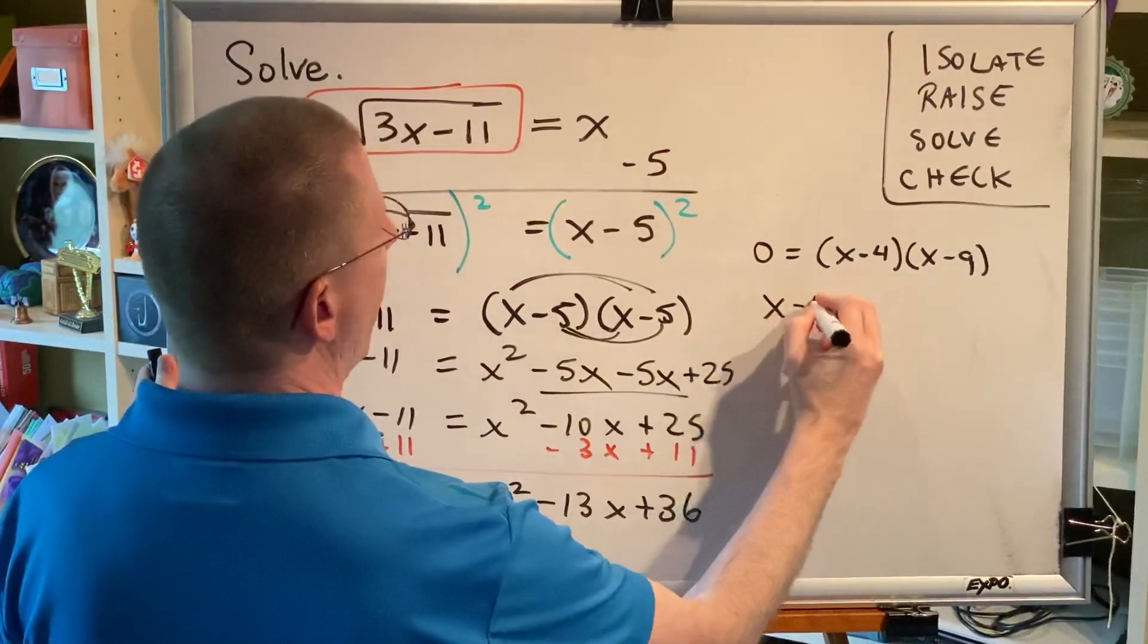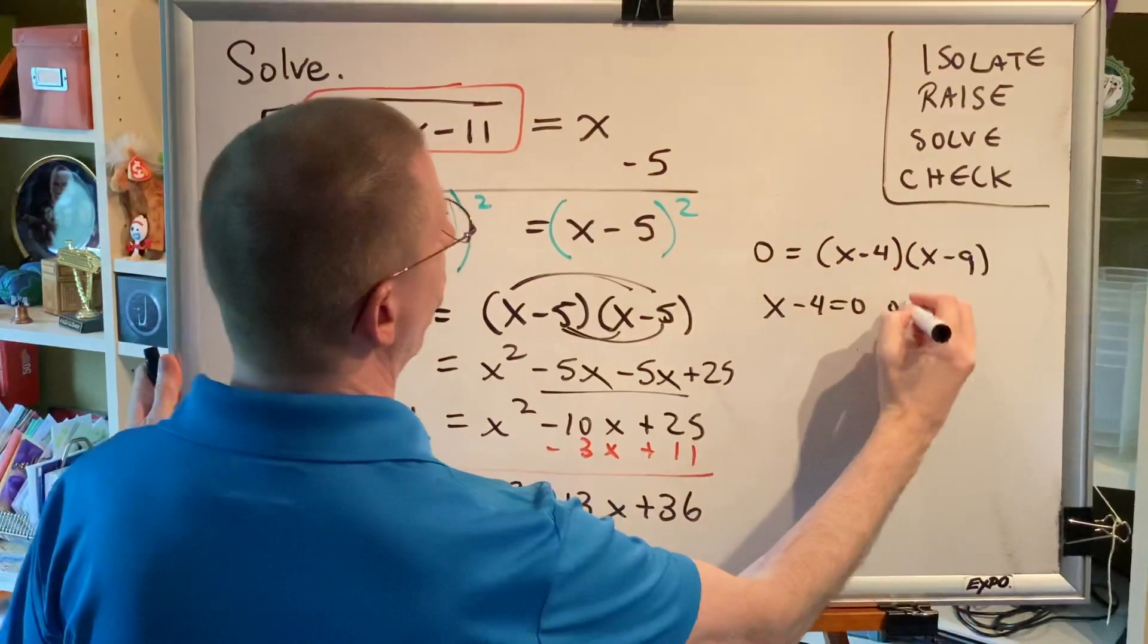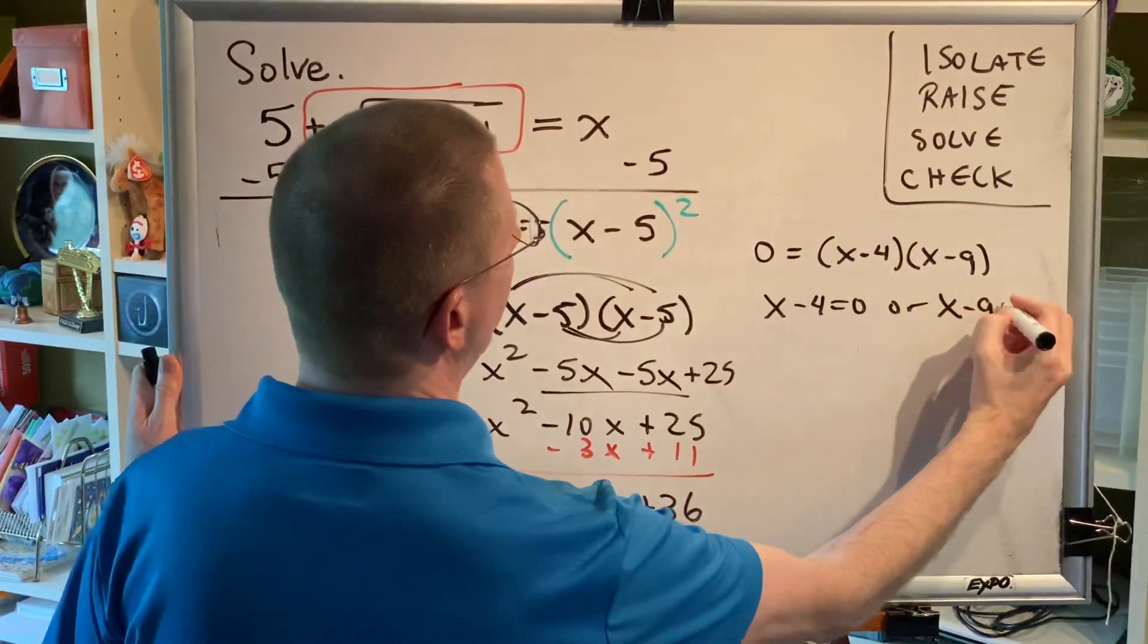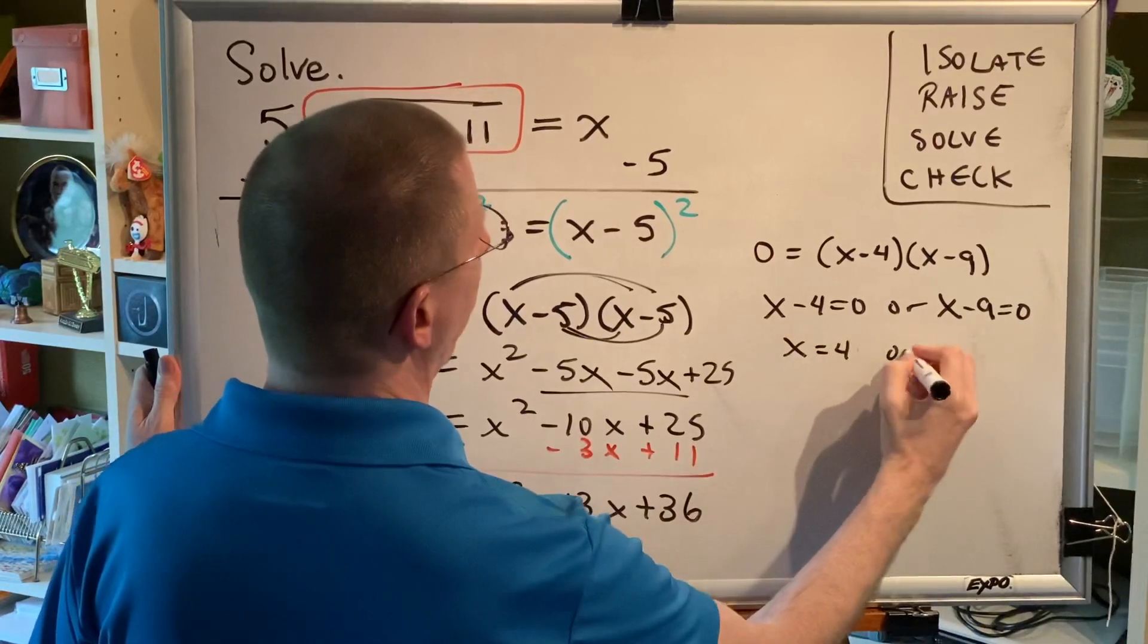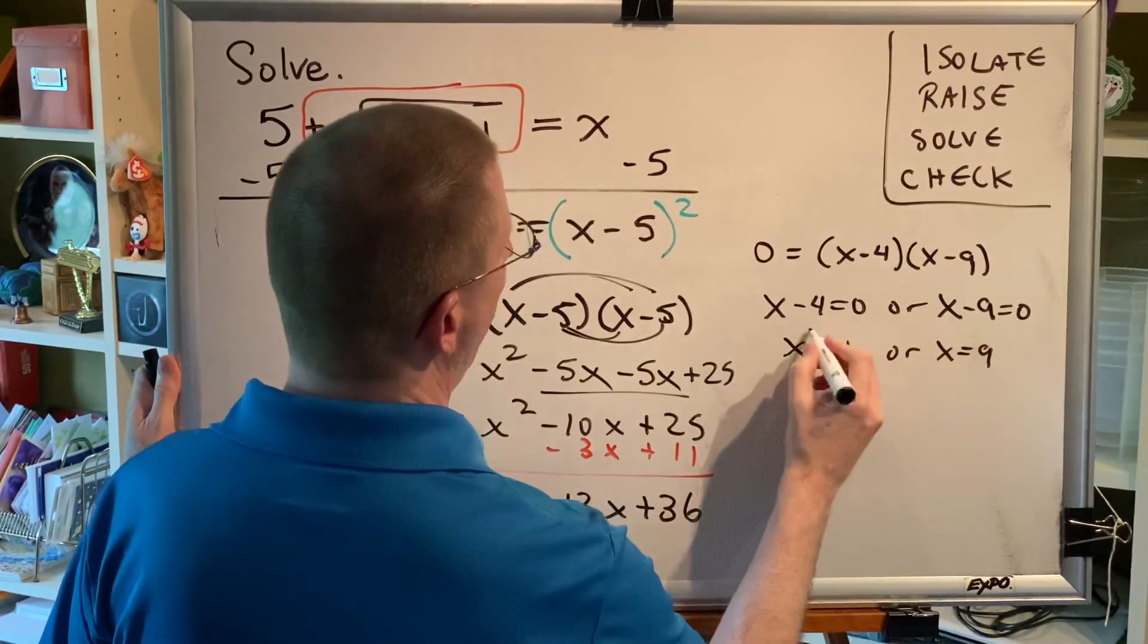Now by the zero product property, x minus 4 equals 0 or x minus 9 equals 0. And we have two possible answers: x equals 4 or x equals 9. But remember,